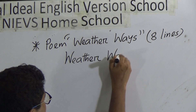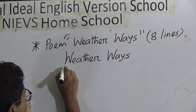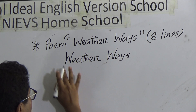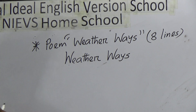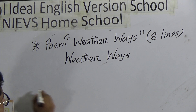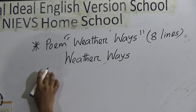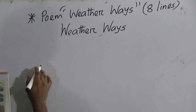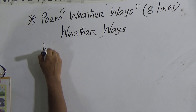The first letter of the topic must be capital. 'Weather' — W is capital, W-E-A-T-H-E-R. Then 'Ways' — W will be capital. So in 'Weather Ways', both W's will be capital. Next line: 'Whatever the weather' — the first letter of a sentence is always capital, but in a poem it might be different.